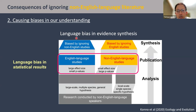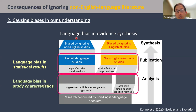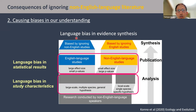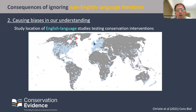However, a slightly different type of language bias might also exist, especially in conservation, which is language bias in study characteristics. For example, studies conducted on local species might be more likely to get published in non-English language journals, as those studies would not be of high interest to international readers. In our recent work, we showed that language bias in study characteristics does exist, having serious consequences for evidence synthesis.